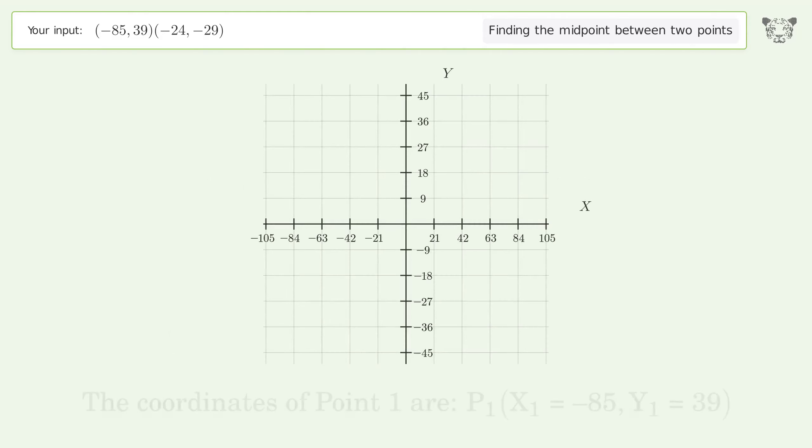The coordinates of point 1 are x1 equals -85, y1 equals 39. The coordinates of point 2 are x2 equals -24, y2 equals -29. PM represents the midpoint of the two points.